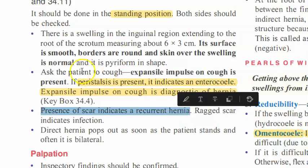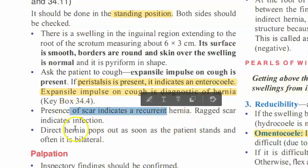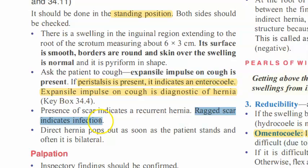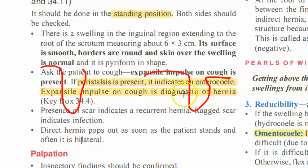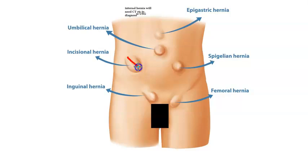In inspection you will also look for any scar. If there is a scar on the swelling it can mean it is an incisional hernia. If there is a ragged scar it can indicate infection. If it is a direct hernia, usually it will be bilateral, because direct hernia comes out of a weak abdominal wall. As soon as the patient stands up it will come out — that indicates a direct hernia.